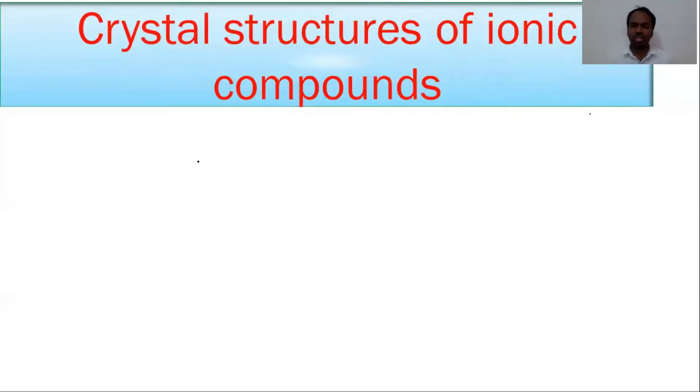Hi friends, in today's class we are going to learn about crystal structures of some ionic compounds. These crystal structures are broadly classified into three types: AB, A2B, and AB2 type categories.